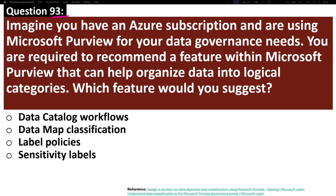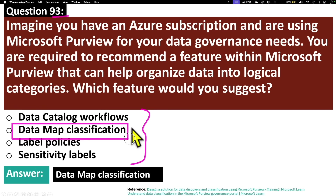Question 93. Imagine you have an Azure subscription and are using Microsoft Purview for your data governance needs. You are required to recommend a feature within Microsoft Purview that can help organize data into logical categories. Which feature would you suggest? The correct answer is data map classification. Data map classification is a method for organizing and categorizing data assets. It involves assigning unique logical tags or classes to data assets, making them easier to understand, search, and manage — knowing what information you have, where it is located, and the level of sensitivity or risk associated with it.